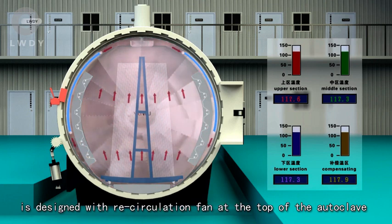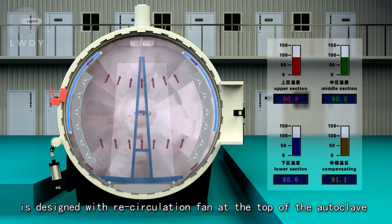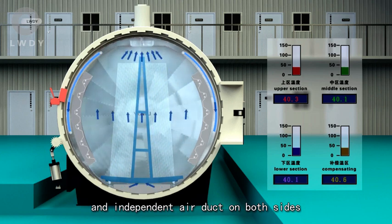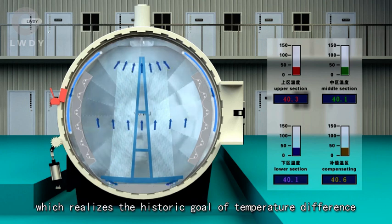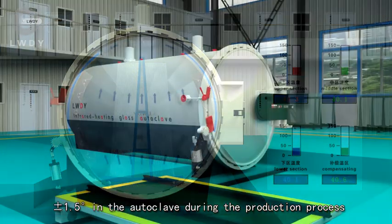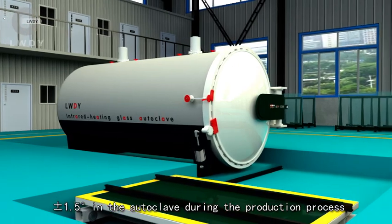It is designed with the recirculation fan at the top of the autoclave and independent air duct on both sides, which realizes the historical goal of temperature difference plus or minus 1.5 degrees Celsius in the autoclave during the production process.